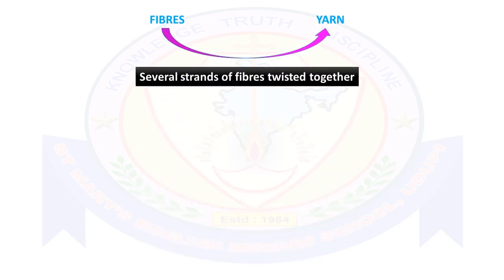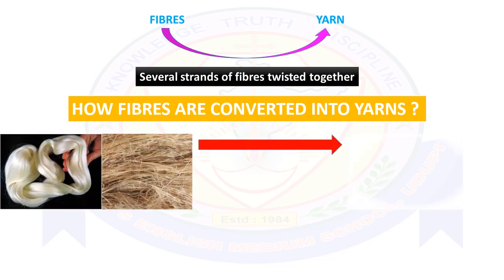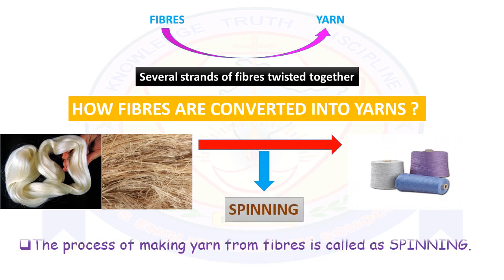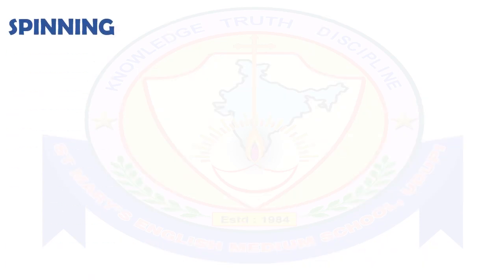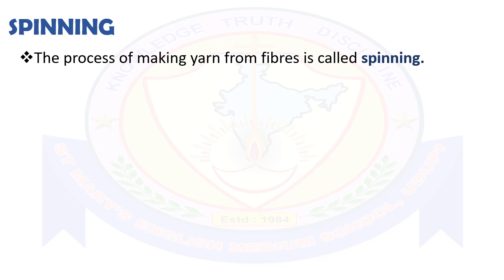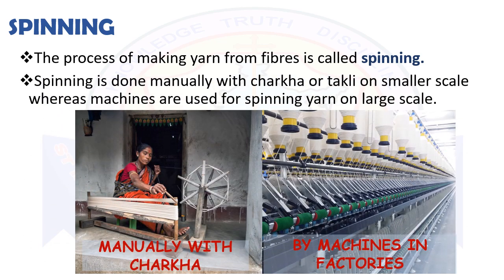We already know that several strands of fibers twisted together make yarn. But how are fibers obtained from plants, animals, and chemicals converted into yarns? The answer is spinning. The process of making yarn from fibers is called spinning. In this process, masses of cotton or wool are drawn out and twisted. Spinning is done manually with a charka or takli on a smaller scale, whereas machines are used for spinning yarn on a large scale.